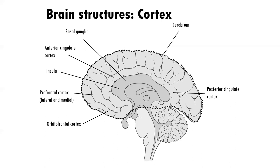The orbital frontal cortex is towards the bottom of the frontal cortex. Other structures moving more inwards from the brain towards the middle include the insula, the anterior cingulate cortex, the posterior cingulate cortex, and the basal ganglia — all of which have very important functions and are often talked about in mental health.